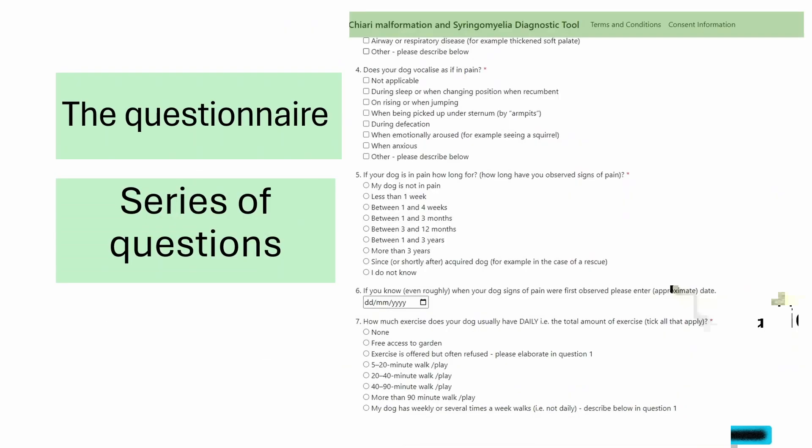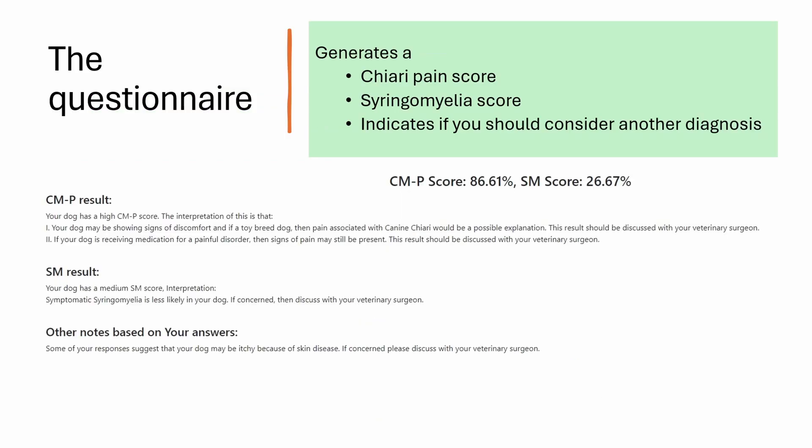What is the questionnaire? It's a series of questions which has already been analyzed statistically to show relevance for canine Chiari and syringomyelia. When you've finished, it gives you a result for Chiari malformation pain, shortened to CMP, and a result for syringomyelia, along with the likelihood. For example, this dog has a high Chiari pain score, meaning they are more likely to have pain from Chiari malformation, though it's not absolute proof — it's an indication. This dog also has a medium syringomyelia score, meaning syringomyelia is much less likely in this instance.